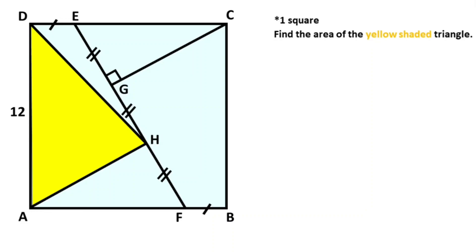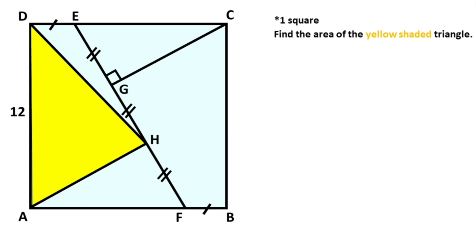Hello everyone. In this video we have one square, and these three parts are given as equal. These two parts are also given as equal, and one side of the square is given as 12 units. Here is given 90 degrees, and the question is: what is the area of the yellow shaded region?